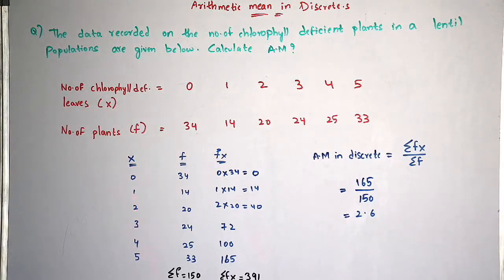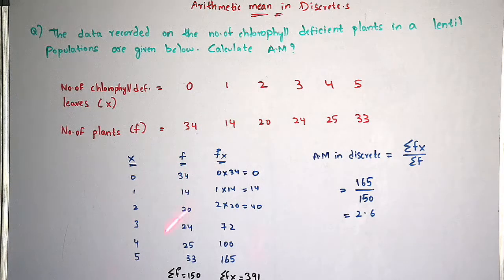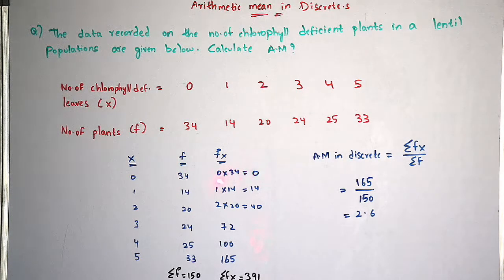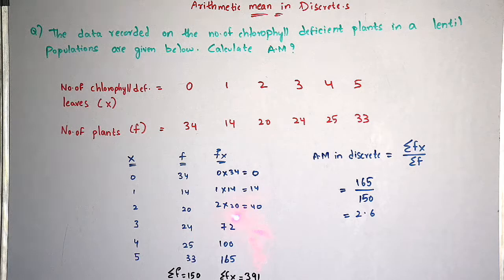The variables are 0, 1, 2 (missing from listing), 3, 4, 5 and frequencies are 34, 14, and others from the question. Calculating fx: 0 into 34 equals 0, 1 into 14 equals 14, 3 into 24 equals 72, 4 into 25 equals 100, 5 into 33 equals 165. In this way you calculate each fx value.